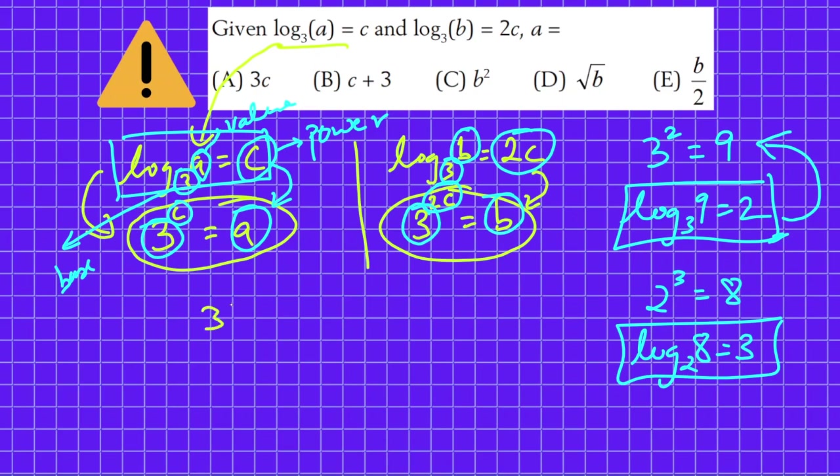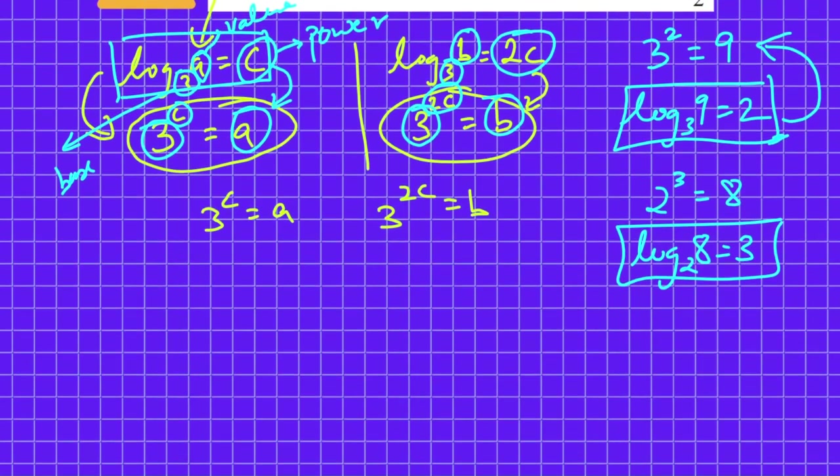So we stopped here. 3 raised to power C equals A and 3 raised to power 2C equals B. We have to find out the value of A, so I can break this as 3 raised to power C times 3 raised to power C, because if the bases are the same we can add the powers.